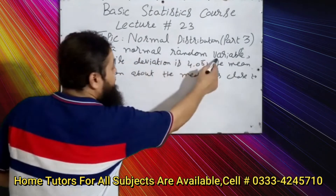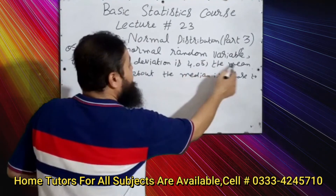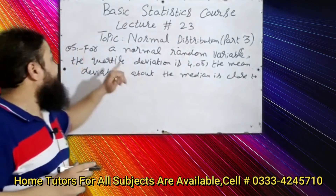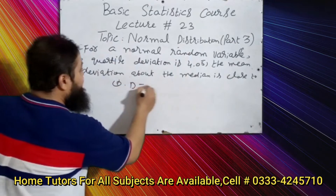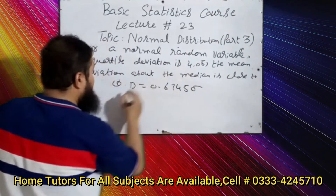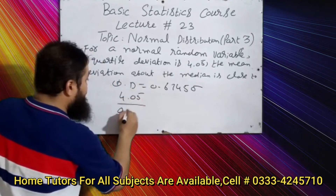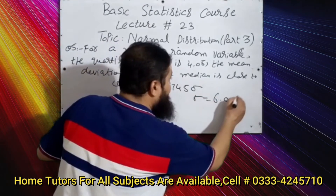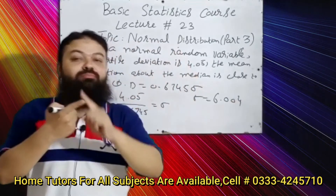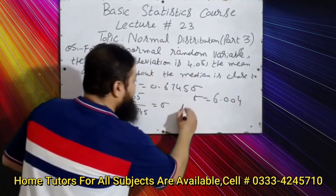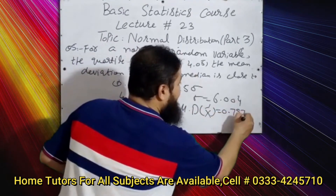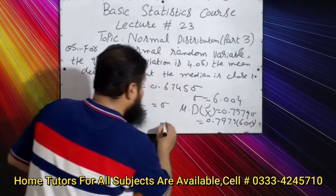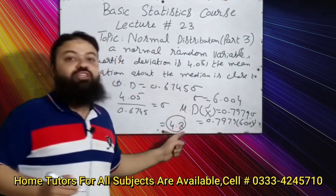Question number five: for a normal random variable, the quartile deviation is 4.05. The mean deviation about the median is close to? In the normal distribution, quartile deviation = 0.6745σ = 4.05, so σ = 4.05 / 0.6745 ≈ 6.004. Mean deviation about median equals mean deviation about mean = 0.7979σ = 0.7979 × 6.004 ≈ 4.8. The correct option is 4.8.